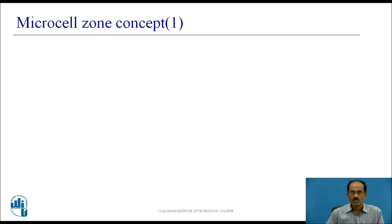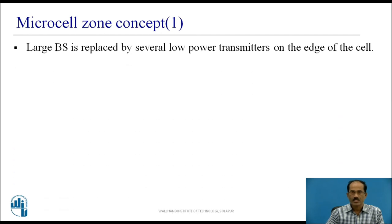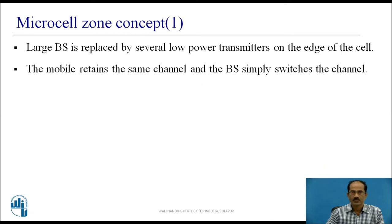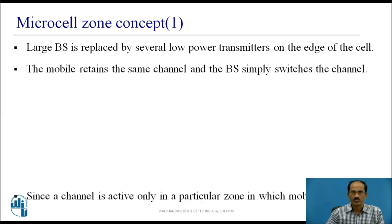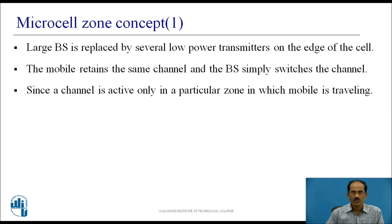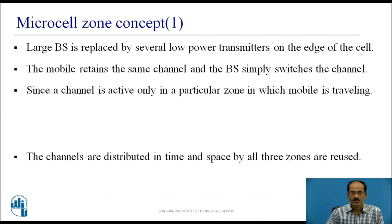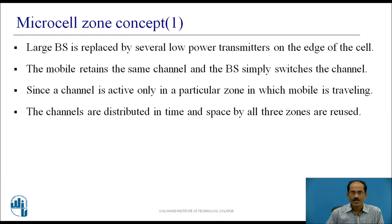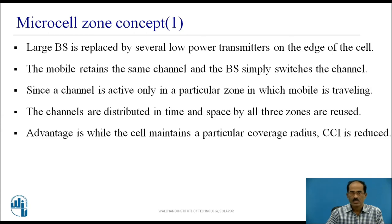Micro-cell zone concept: the large central base station is replaced by several low-power transmitters on the edge of the cell. The mobile retains the same channel, and the base station simply switches the channel to a different zone site as the mobile moves from one zone to another. Since a given channel is active only in the particular zone in which the mobile is traveling, base station radiation is localized and interference is reduced. The channels are distributed in time and space by all three zones and are also reused by co-channel cells. The advantage is that while the cell maintains its coverage radius, co-channel interference is reduced due to zone transmissions on the edge of the cell.